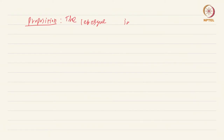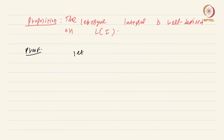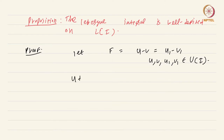The Lebesgue integral is well defined on L of I. To prove this, let f equal u minus v, which is in turn equal to u₁ minus v₁, where u, v, u₁, v₁ are all upper integrable functions. Then we have that u plus v₁ is nothing but u₁ plus v, and the sum of two upper integrable functions is thankfully upper integrable.